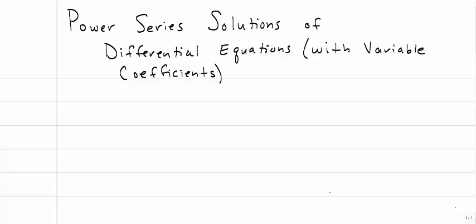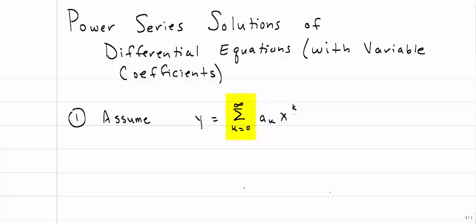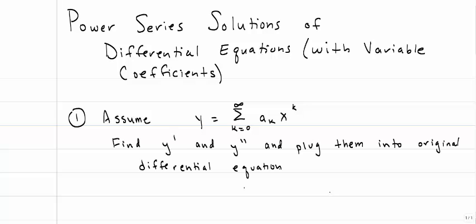First, we're going to assume our solution is in a particular form — specifically, we'll assume this is an analytic function that can be represented as a power series. That is, our solution y equals the summation from k equals 0 to infinity of a coefficient a sub k times x to the k power. Just like with undetermined coefficients, we find y prime and y double prime and plug them into our original differential equation. The next step is to collect powers of x and equate the coefficients to whatever's on the right-hand side of the equation.